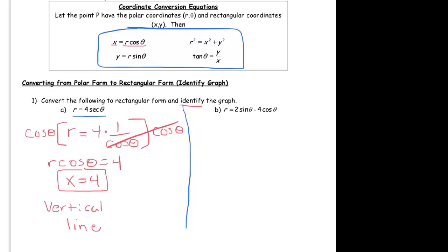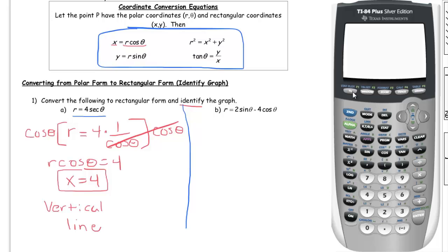I've got r equal to 2 sine of theta minus 4 cosine of theta. So this time, actually, let's put it in the calculator first, since we've got it out. r1 equals 2 sine of theta minus 4 cosine of theta. And I want to keep my window. I think that should be fine. I hit graph.